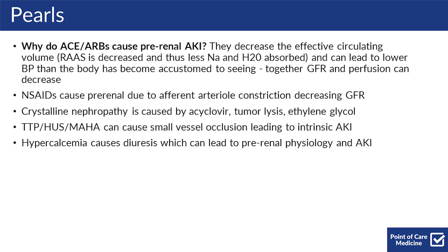So why do ACEs and ARBs cause a pre-renal AKI? Well, they decrease the effective circulating volume because RAS is decreased and thus there's less sodium and water reabsorbed, and can lead to lower blood pressure than the body has become accustomed to seeing. Because of both of those things together, GFR and perfusion can be decreased. NSAIDs cause pre-renal physiology due to afferent arteriolar constriction, which decreases your GFR.